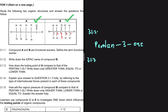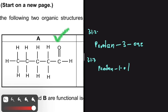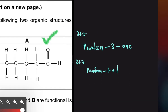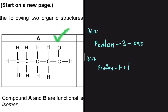For 3.1.3, how does the boiling point of compound A compare to that of pentan-1-ol? We write down only greater than, equal to, or lower than. Compound A is an aldehyde because the carbon bonded to the oxygen is only bonded to one other carbon, so that makes it an aldehyde.